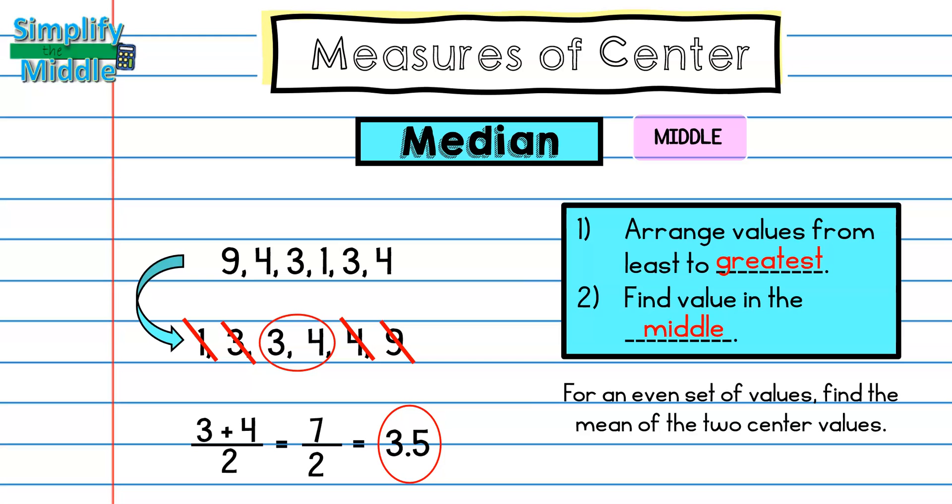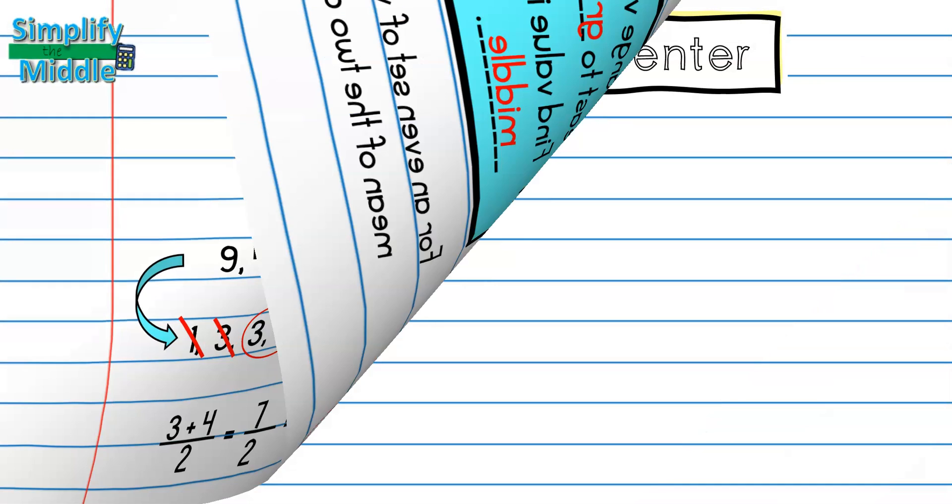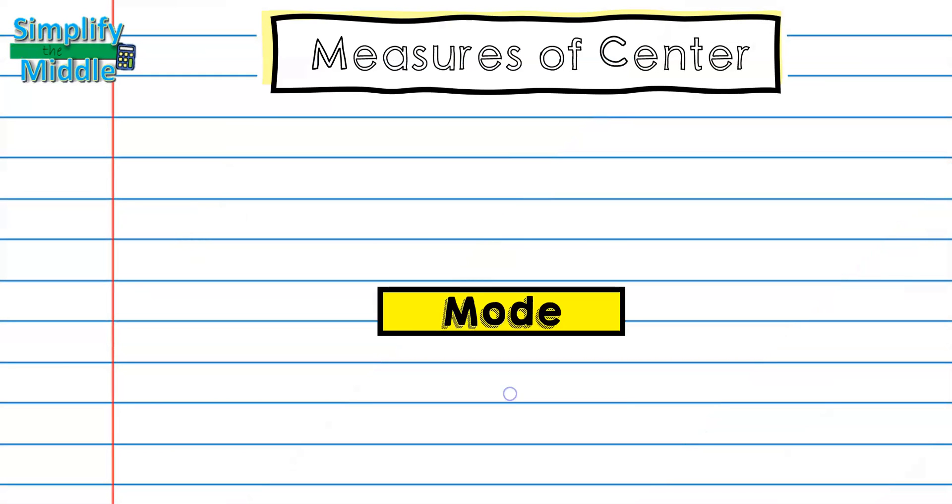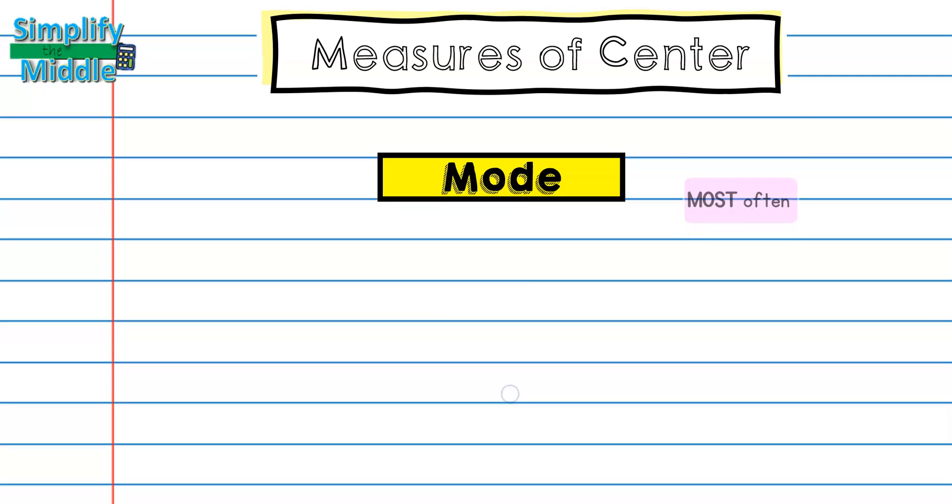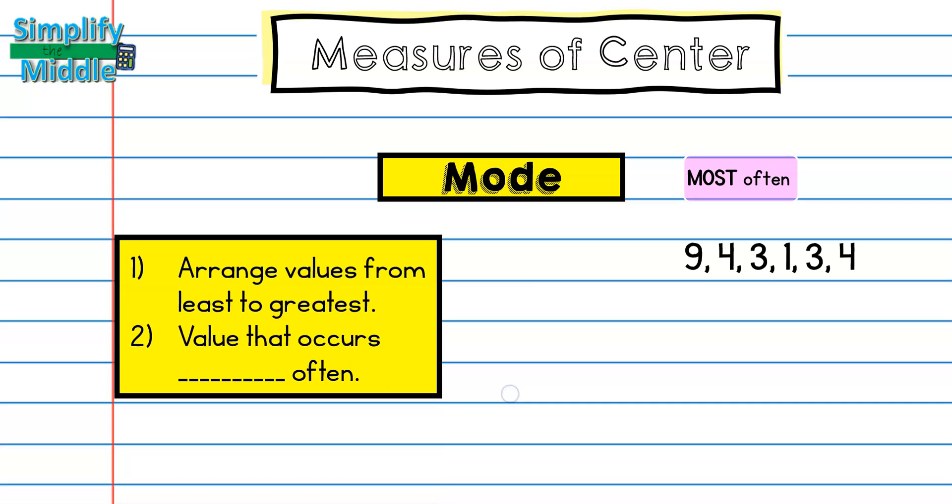Now that I've found the mean and the median for this data set, we're going to find our last value, which is the mode. We like to think of mode as most often. So we have the same data set here. And I would arrange the values from least to greatest. The reason that I do this for mode, if it's not obvious, is because then it helps me see clearly which numbers repeat. So I'm going to go ahead and put those in the same order as last time, 1, 3, 3, 4, 4, 9.